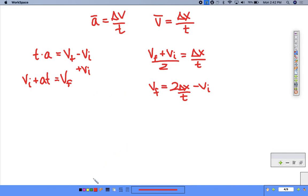Now I can set these two equal to each other. I'll change colors here for a second, and we can say vi plus at equals 2 delta x over t minus vi.